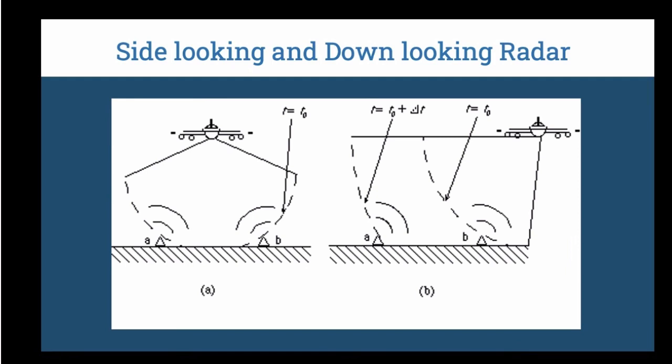However, on the right side, the signal will take a different time to reach the receiver. The time it takes for the signal to reach point A and point B will be different. Similarly, the time to receive the signal will also be different. In that way, we will be able to differentiate between these two points and we will also be able to differentiate between the distance of these two points.